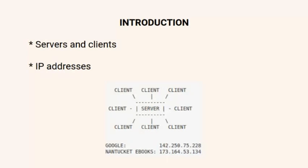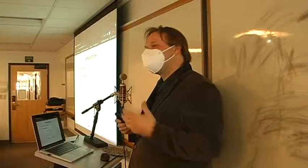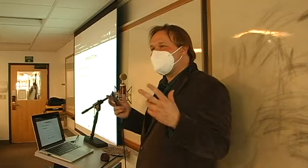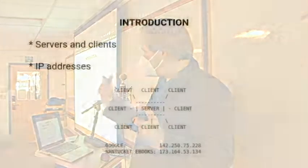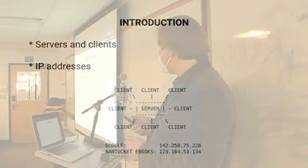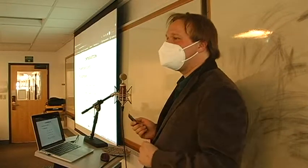The second thing is IP addresses. An IP address is a set of numbers that identify a particular computer and help computers find each other over the internet. For example, if you were to type 142.250.75.228 into your browser, that would be one of the many IP addresses for Google. It's quite unwieldy to remember all those numbers, so we have domain names - human-readable strings you can type in. The internet's domain name system associates a particular domain name with a particular IP address. So: servers, clients, IP addresses - all important when hosting your own site.